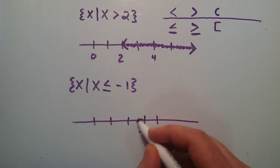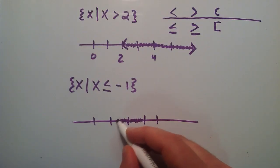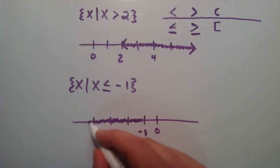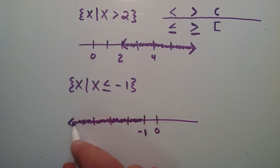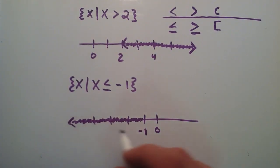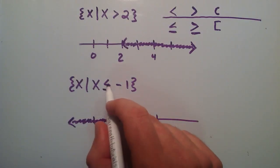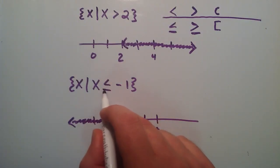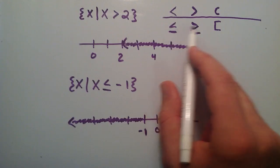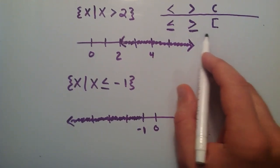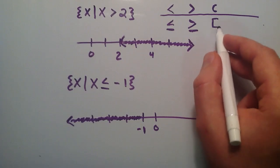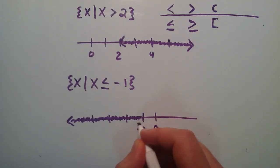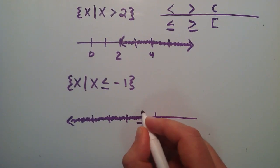The first step is to simply shade in all the values that are less than negative 1. We'll put a little arrow here to show that all the values that go in that direction are also included. And now we look at this inequality sign, and this time we have a less than or equal to sign. So we want to use the square bracket. Now we're going to just flip this around. We want the points of the square bracket to point in the direction that our set is traveling. So we're just going to write it this way here.